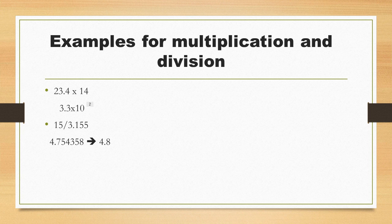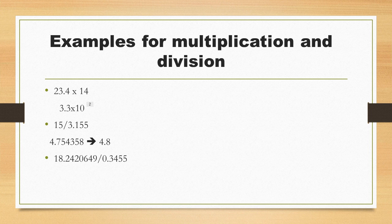Example 3: 18.2420649 divided by 0.3455. The answer should be 52.79, rounded to 4 significant figures.